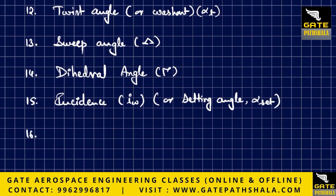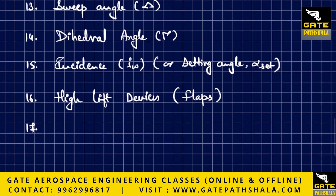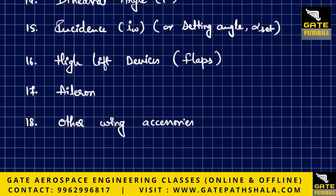The next parameter is what kind of high-lift devices you want — different types of flaps such as slats with multiple slots, double-slot flaps, plain flaps, or jet flaps. For lateral control, we require ailerons mounted on the wings. Finally, there are some other wing accessories. These are the 18 wing design parameters.